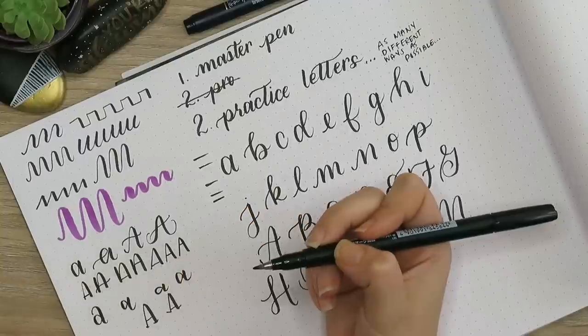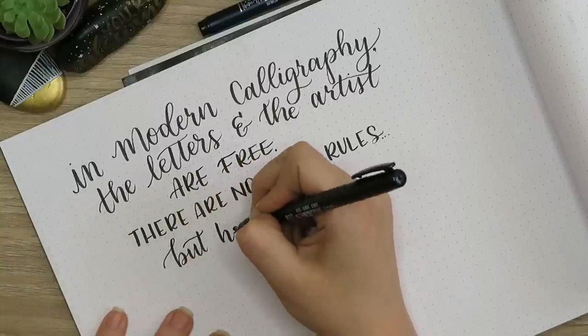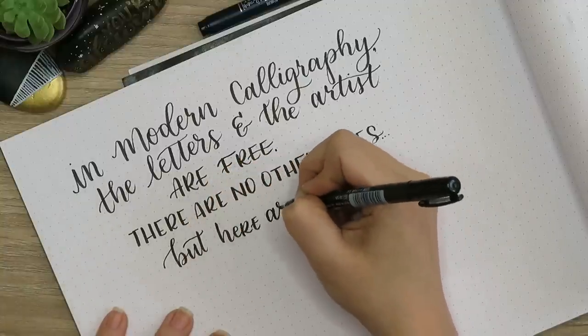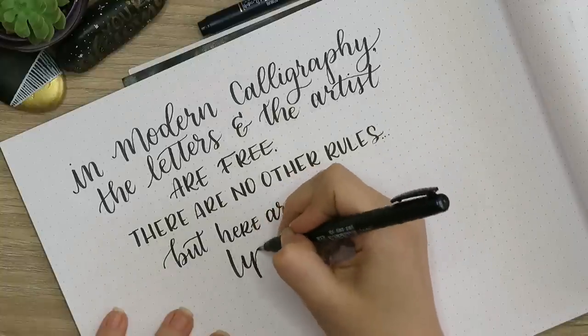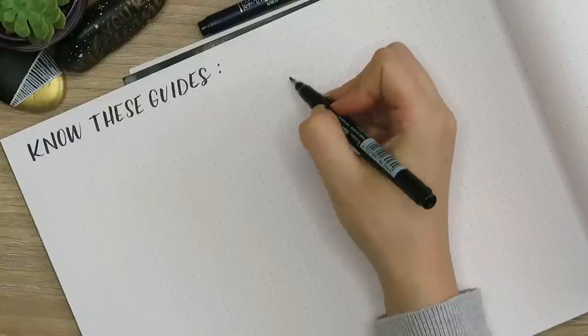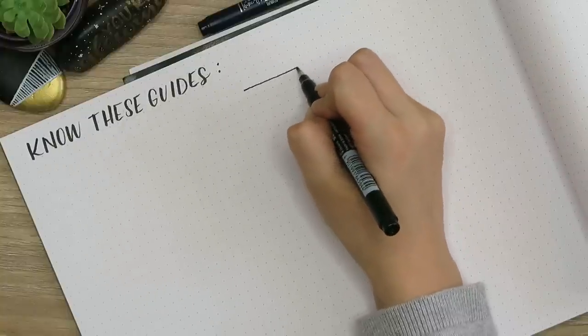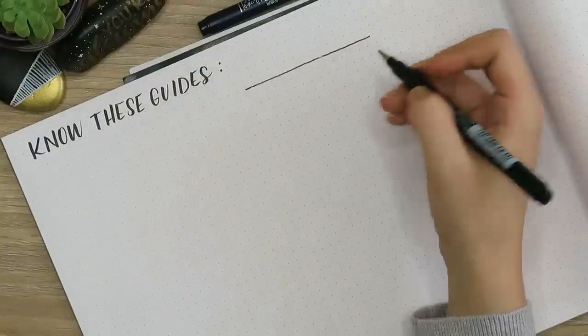Like I said, technically that's it. There are two rules to being a modern calligrapher: thicken up those downstrokes, and then whatever rules you need for the pen that you're using, which will vary. But there are going to be some tips that will help you get better results, and I'm going to share those with you now.